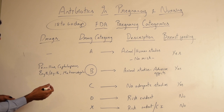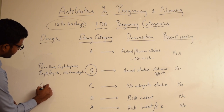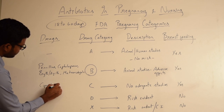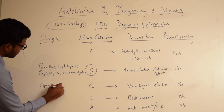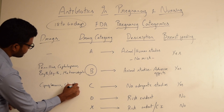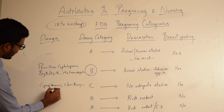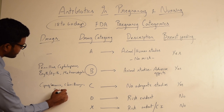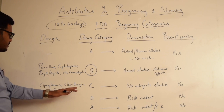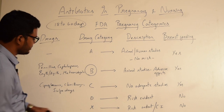Drugs falling under category C include fluoroquinolones such as ciprofloxacin, clarithromycin (which is another macrolide), and various sulfa drugs such as dapsone. So ciprofloxacin, clarithromycin, and sulfa drugs all come under pregnancy category C.